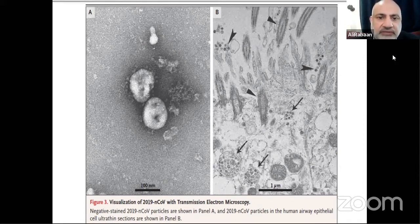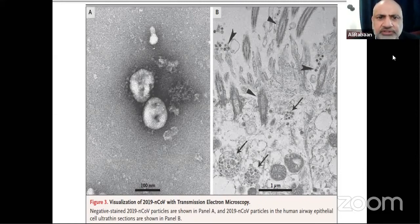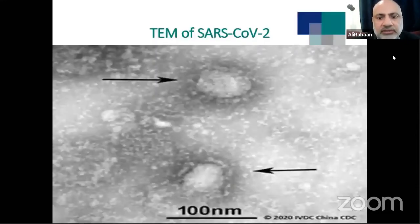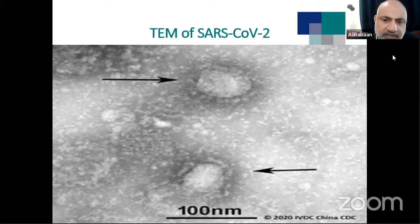This is transmission electron microscopy of SARS-CoV-2. On the left side is the virus itself — approximately noble shape — and you can see the dots around it representing the spikes on the virus. On the right-hand side you can see the human airway epithelial cells infected with the virus. Virologists study the cytopathic effects after the virus invades the cell. Another picture from the Chinese CDC clearly shows the size of the virus and the spike proteins.